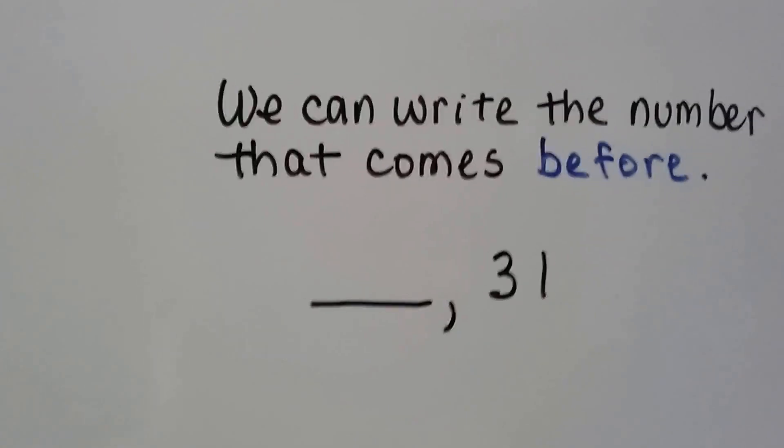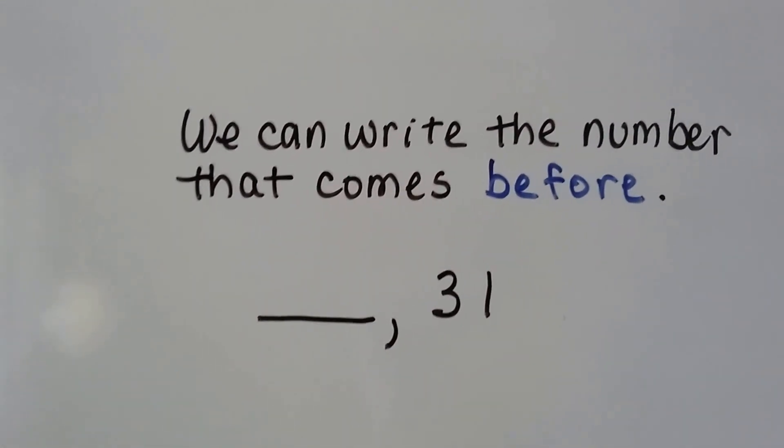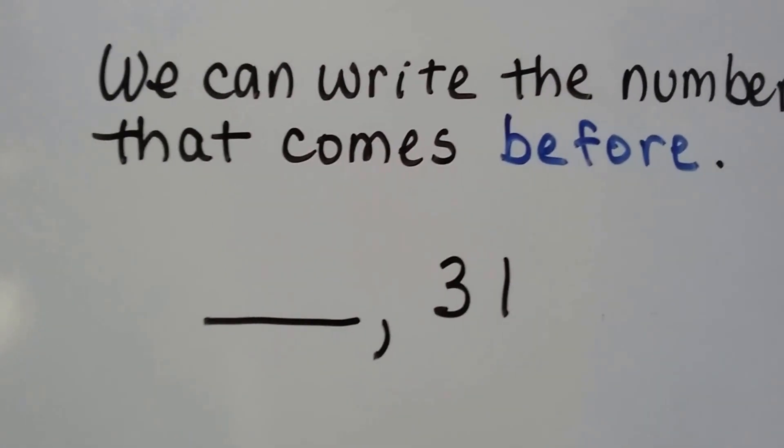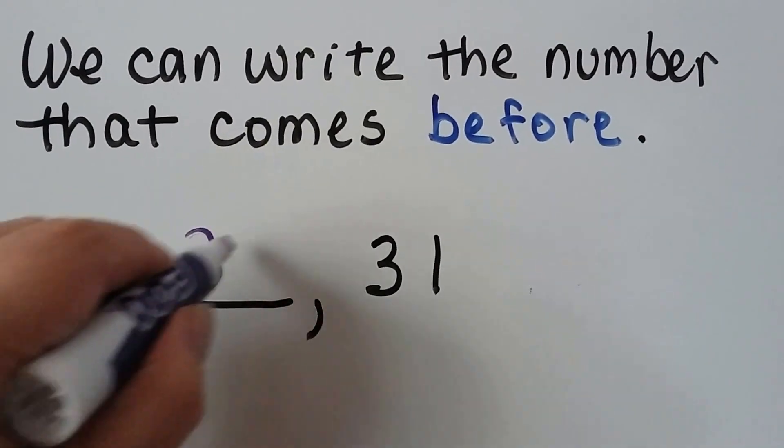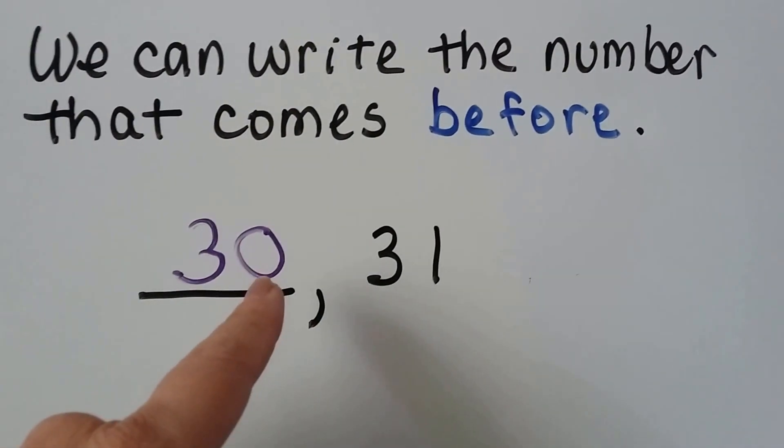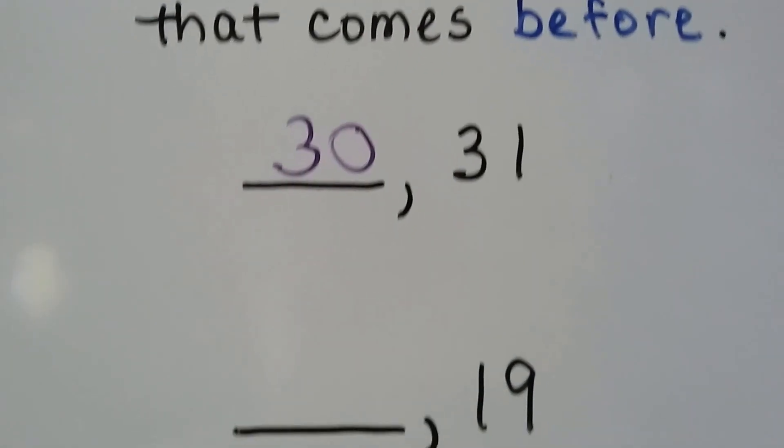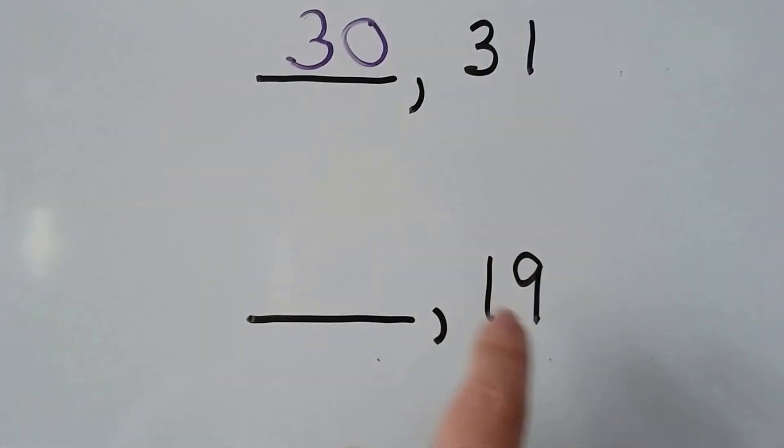We can write the number that comes before. What number comes before 31 when we count? 30. It has zero ones and this has one one, so 30 comes before 31. It has one less one.